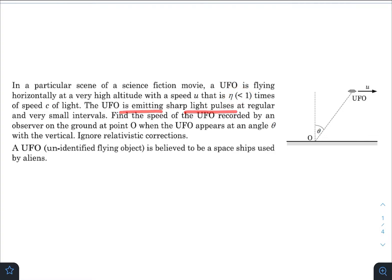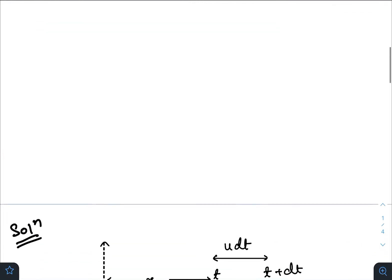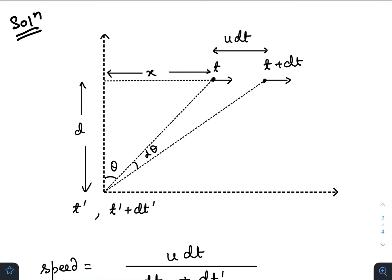The UFO is emitting sharp light pulses at regular and very small intervals. Find the speed of the UFO recorded by an observer on the ground at point O when the UFO appears at an angle θ with the vertical. Ignore relativistic corrections. Let us analyze the question.